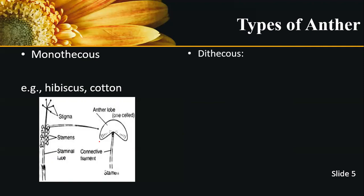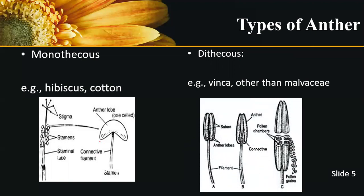Other than the Malvaceae family, most plants have two lobes. An anther with two lobes is the typical anther type, called dithecous. Malvaceae family members have only one lobe, so they are called monothecous, while typical anthers found in most other plants are dithecous with two lobes.